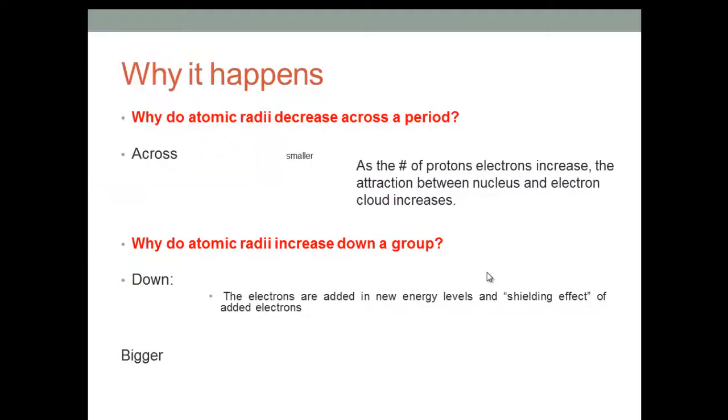So, why does this happen? Why decrease across a period and increase down a group? The reason for this is very simple. As we go across, they become smaller because as we add more protons, we increase the attraction. Therefore, the electron cloud is pulled in. So, there's a greater force of attraction and that force is being pulled in.